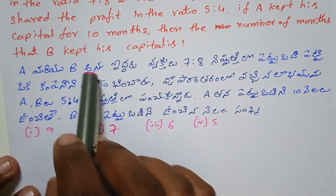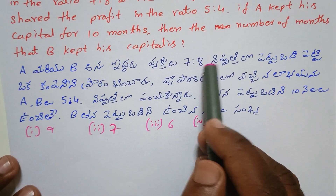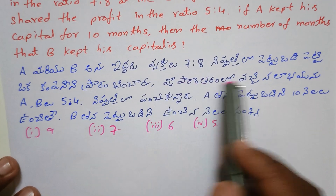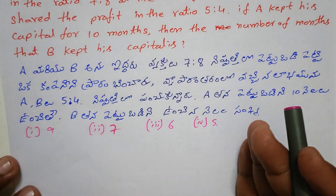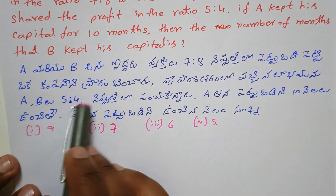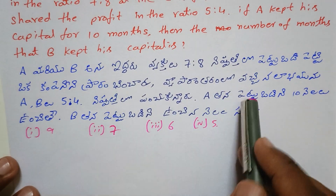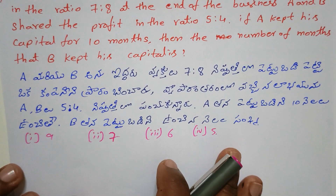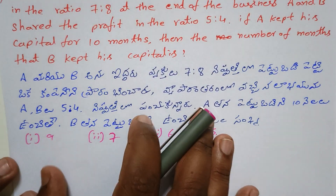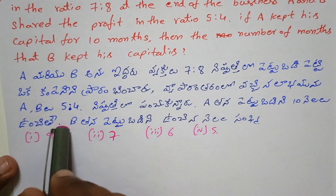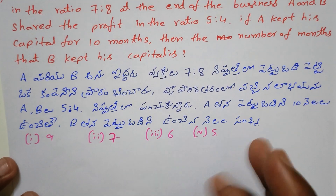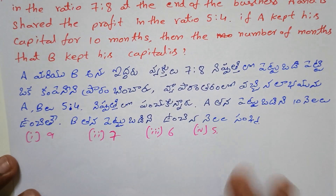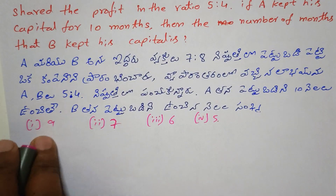A and B's investment ratio is 7 is to 8. Profit ratio is 5 is to 4. Time ratio — only one is known: A's time is 10 months. We need to find B's time. That's the investment of time.